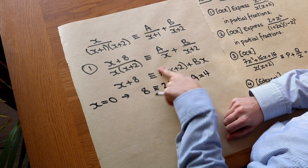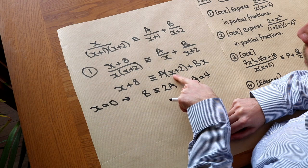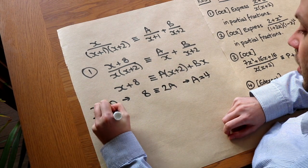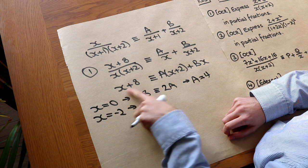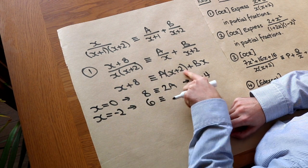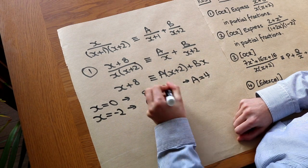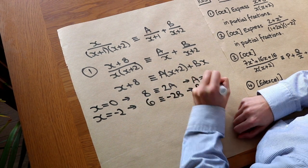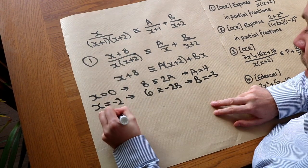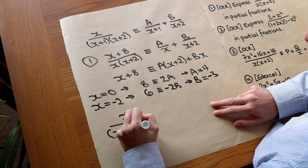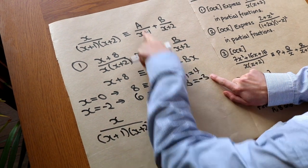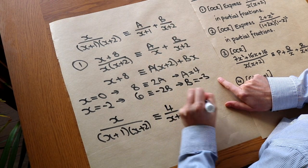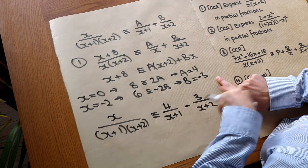Now what value of x should we choose to wipe out the A term and be left with B? Well, what about minus 2? Because minus 2 + 2 = 0, zeroing out that term. So with x = −2: the left-hand side is −2+8 = 6, the A term is 0, and we're left with −2B. That means B = 6÷(−2) = −3. So the final answer is that (x+8)/(x(x+2)) is identical to 4/x minus 3/(x+2). Notice we've moved that minus sign out to replace the plus.